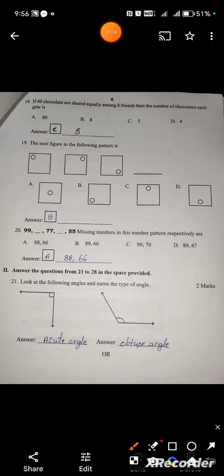If 40 chocolates are shared equally among 8 friends, then the number of chocolates each gets is? Divide: 40 divided by 8, 8 fives are 40. So each friend will get 5 chocolates. Option is C.